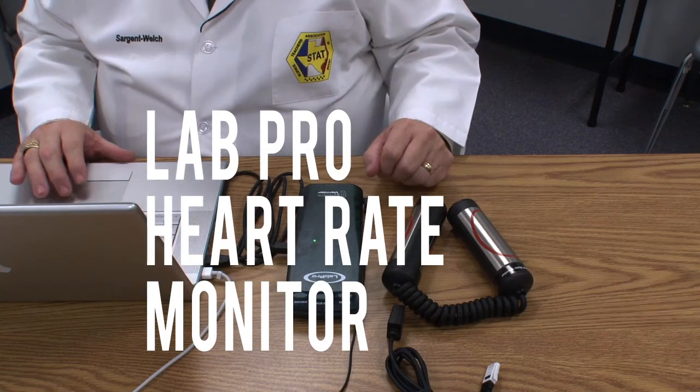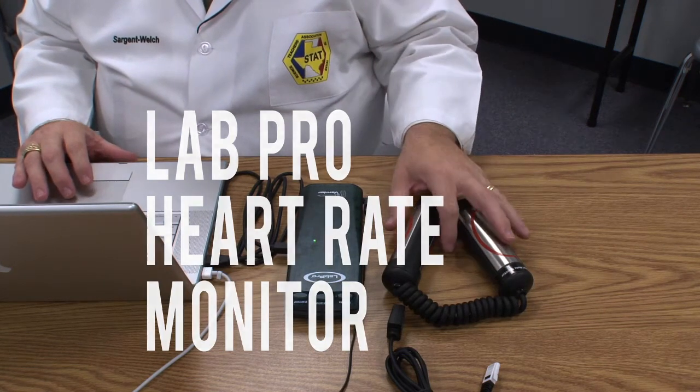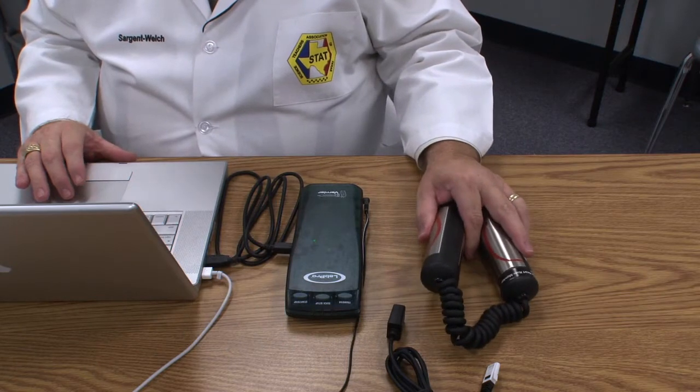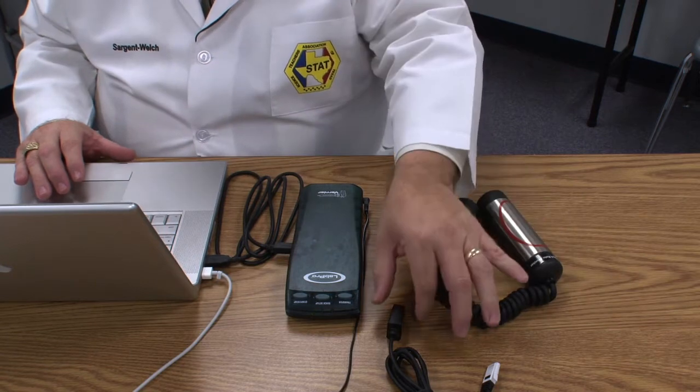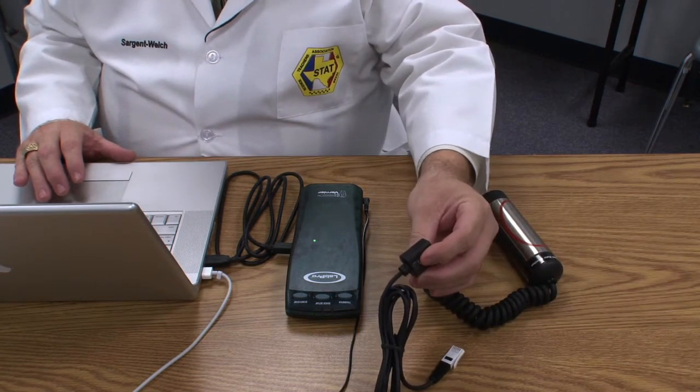This probe is called the heart rate monitor and it works a little differently than most probes because the actual sensor is separate from the interface for the lab probe.